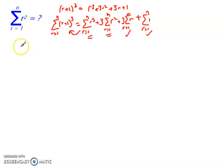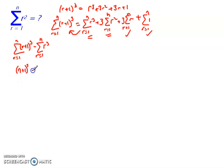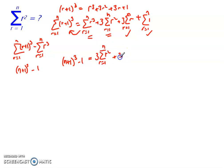Moving the sum of r³ across, the left-hand side becomes the sum of (r+1)³ minus the sum of r³. By the same telescoping rule this equals (n+1)³ minus 1. Substituting back, (n+1)³ − 1 equals 3 times the sum of r² plus 3 times the identity for the sum of r, which is (3/2)n(n+1), plus the identity for sum of 1, which is n. Now we make the sum of r² the subject.